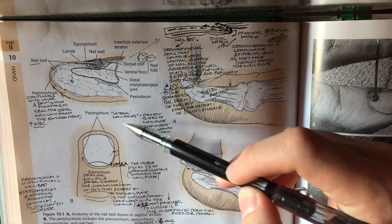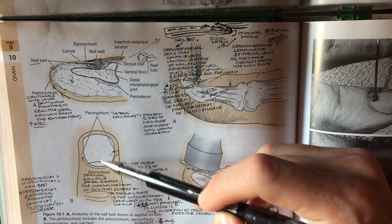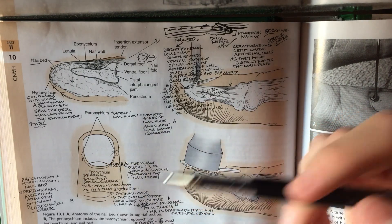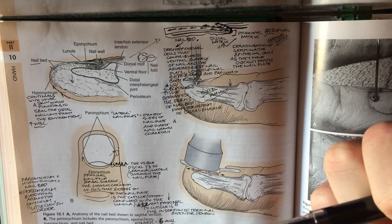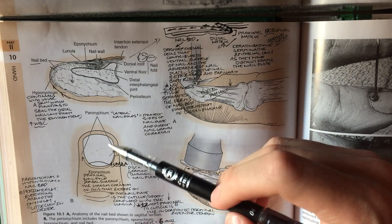Starting off with the perionichium, these are just the lateral nail folds that protect the lateral parts of the nail plate. The nail plate is the hard thing that you can feel and thump, and it's actually very strong, full of keratin.